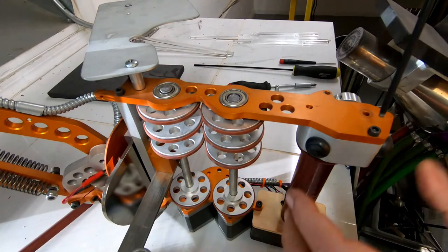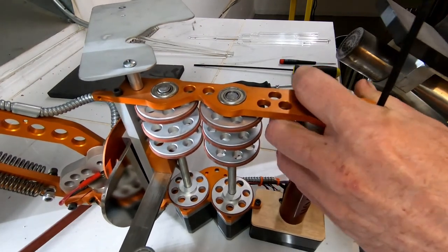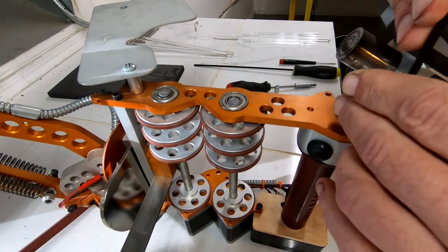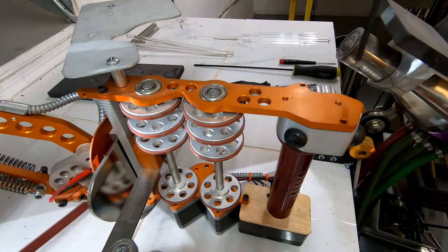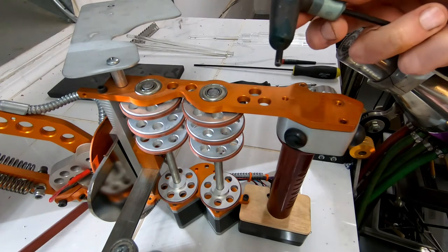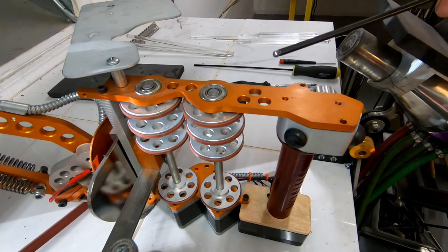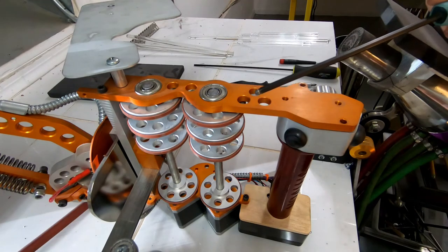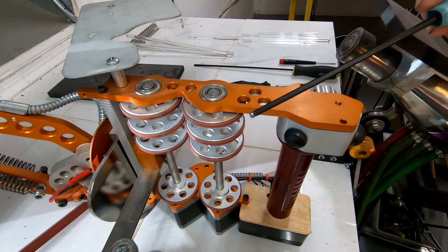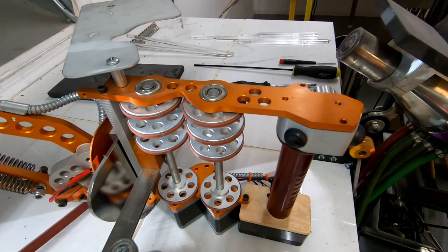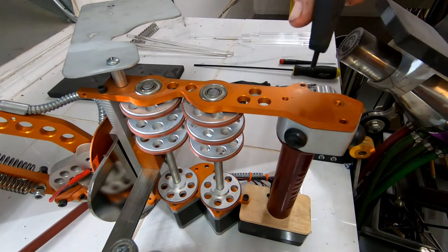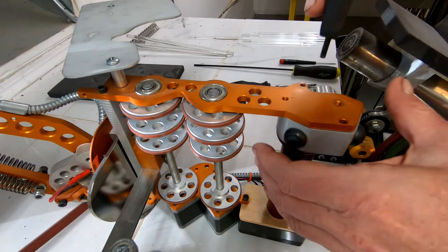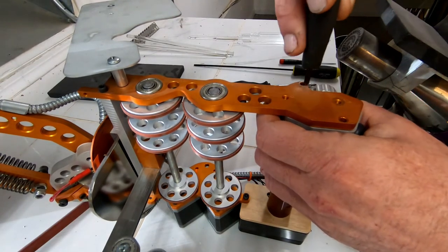Now the screws are locked in place with removable Loctite, so they might be kind of hard to get off. If you notice that the screw is resisting a little bit, make sure that you're not using the ball end driver if you have ball end drivers. If the screw seems like it's going to take a lot of force to remove, make sure that you use the straight hex key. Make sure the hex key is inserted fully and you have control of the handle as you twist.